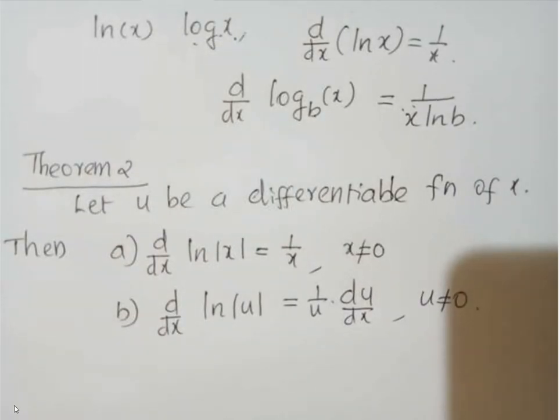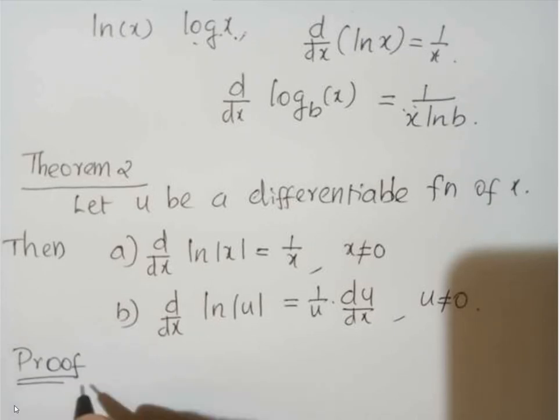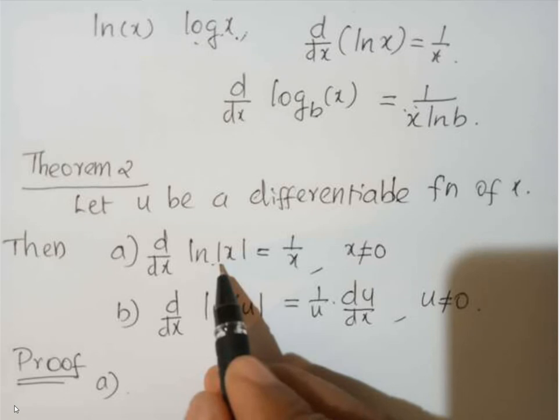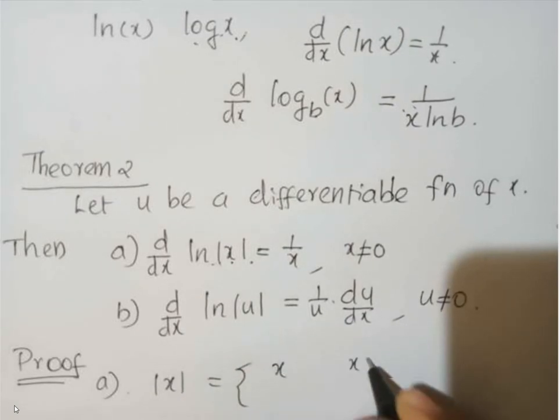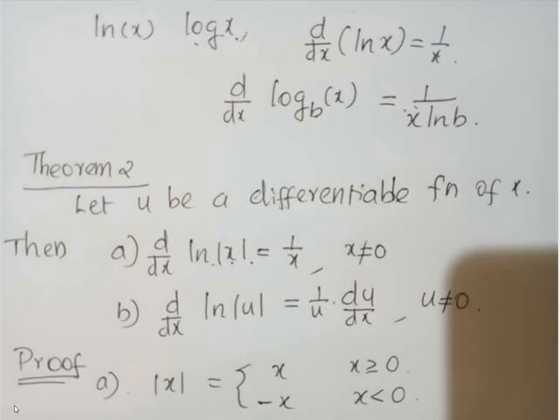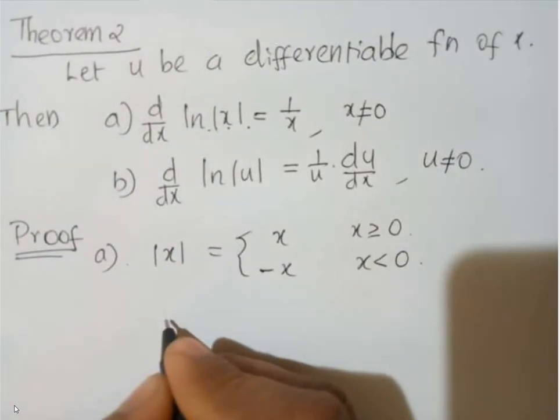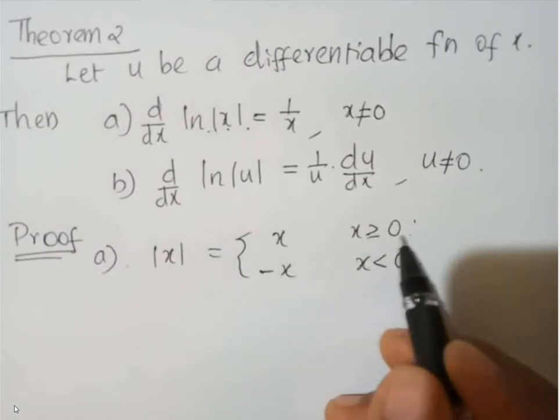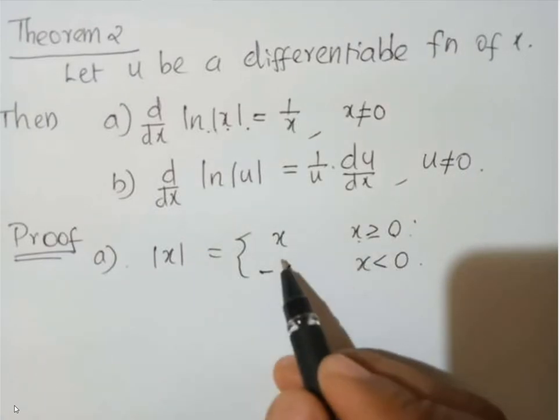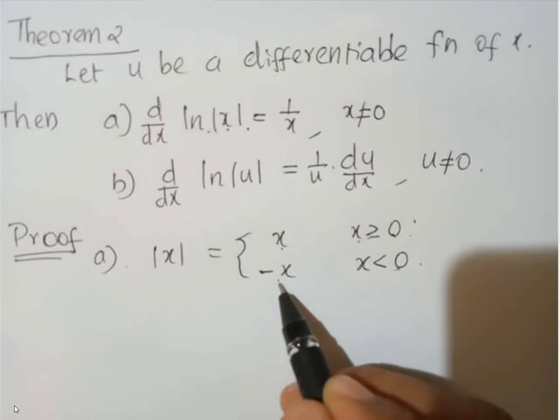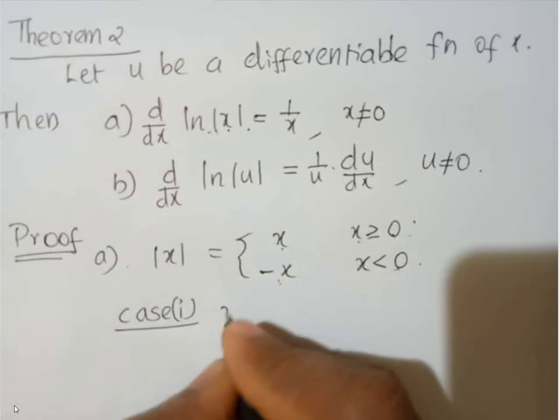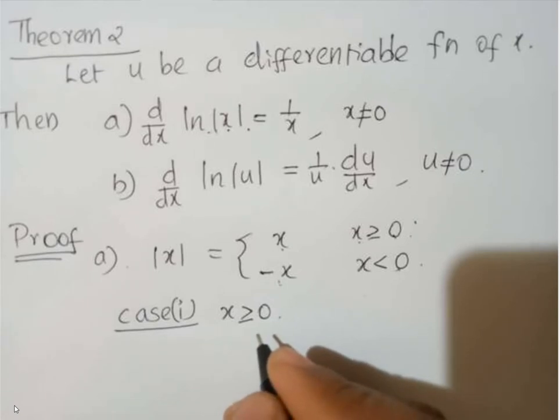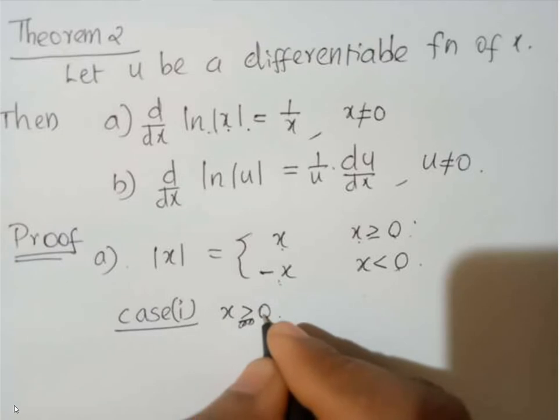So, the proof of this theorem: here you have to find out the derivative of natural log |x|. So, what is the definition for |x|? |x| is equal to x if x greater than or equal to 0, and minus x if x is less than 0. Right? So, |x| means in the case of two variables, two cases here: when x greater than 0 the value is x and when x less than 0 the value is minus x. So, here we have to go through two cases. Case 1 is x is greater than 0, not x is greater than or equal to 0. Sorry. Why? x is greater than 0 because ln x is not defined at x equal to 0.